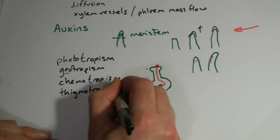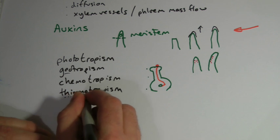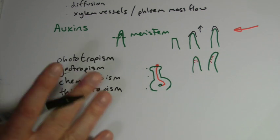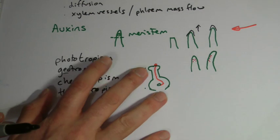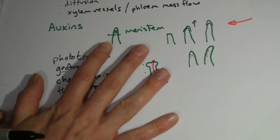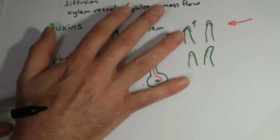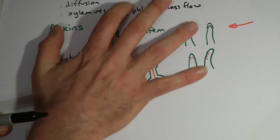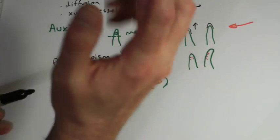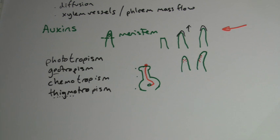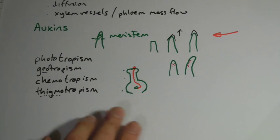The last tropism, which is often forgotten, is thigmotropism — growth in response to touch. The classic example is ivy. Think about how ivy grows along a fence or wall and is very tough to get off. It's a touch response: when it can touch against something it grows against it rather than outwards, because it would have no support if it grew outward.